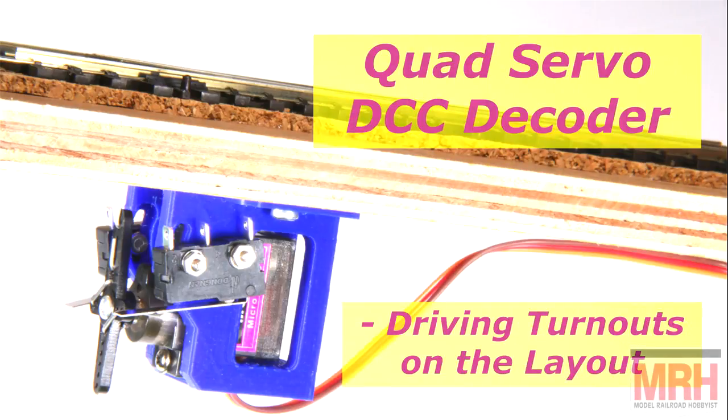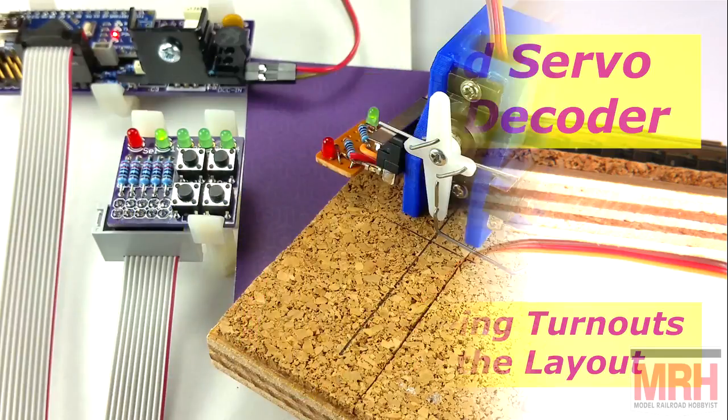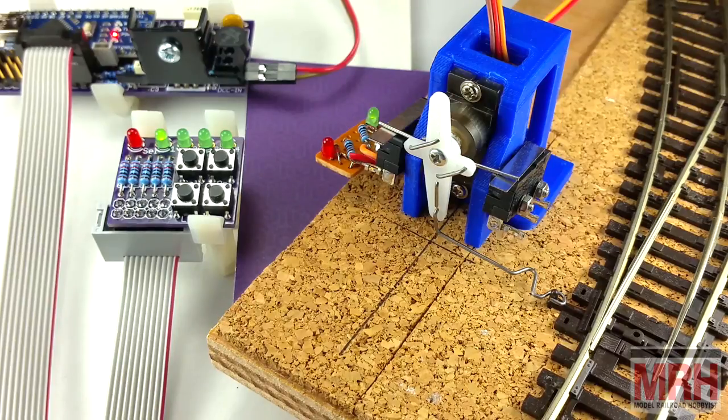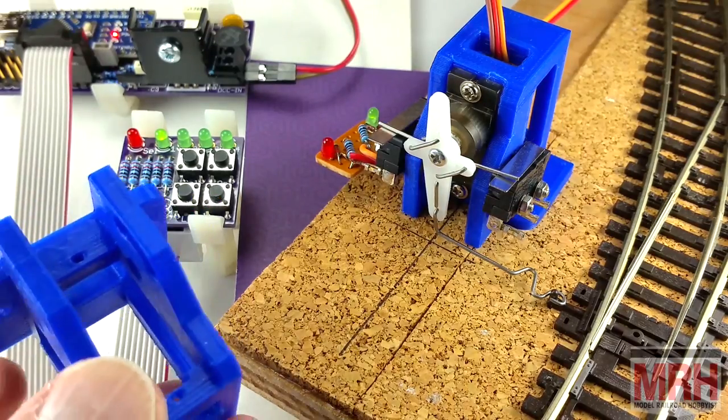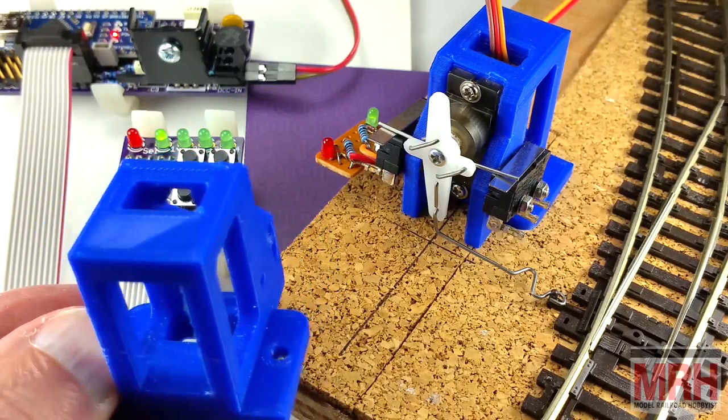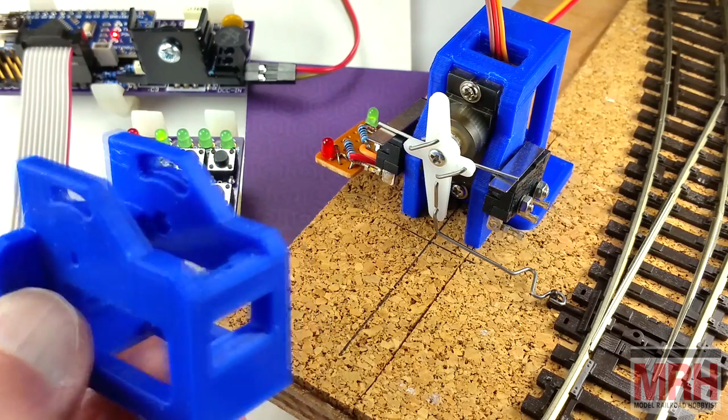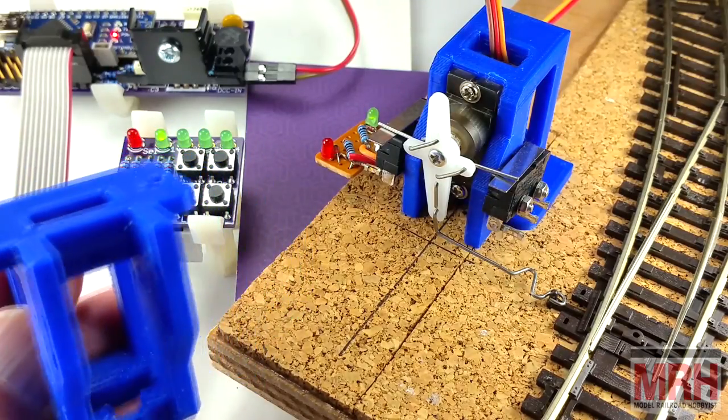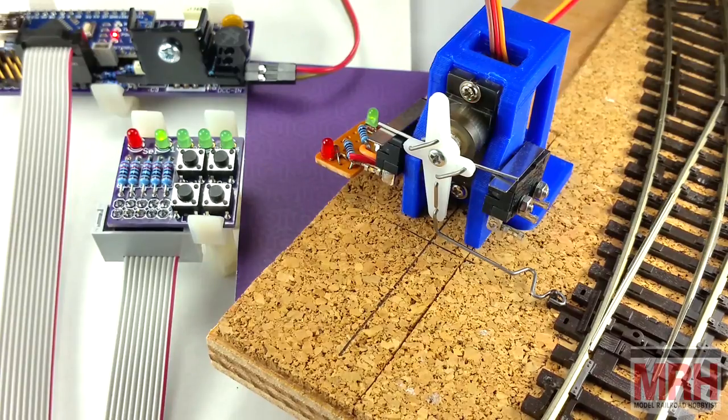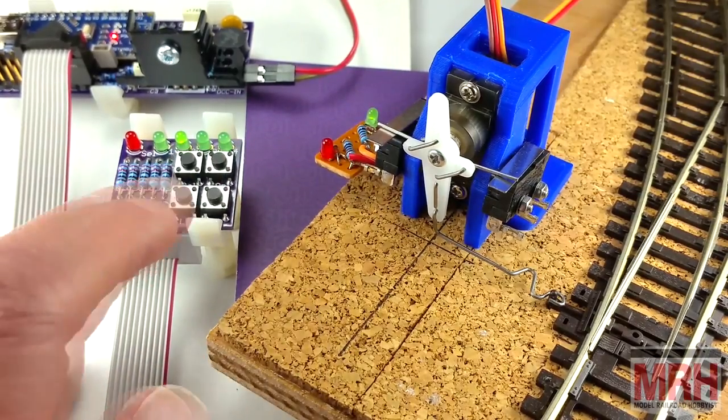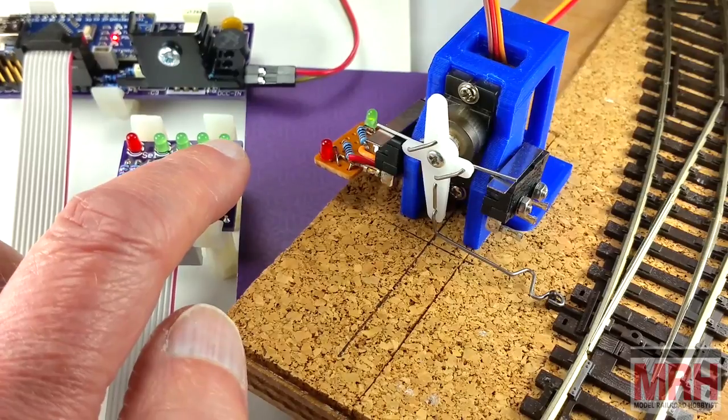Now we can look at driving the actual turnouts on the layout from the servos. For this first demonstration, we have a servo mounted above the baseboard. We could have this in a hidden part of the layout or on a fiddle yard. The mount was one which was designed and 3D printed by my brother Derek. A very useful chap to have around. The mount has fittings for standard servos and for two microswitches, which can be used for signalling or to switch the polarity of the turnout frog.